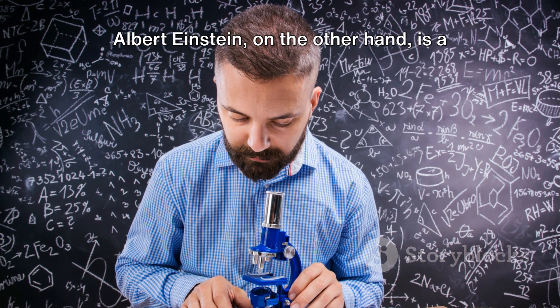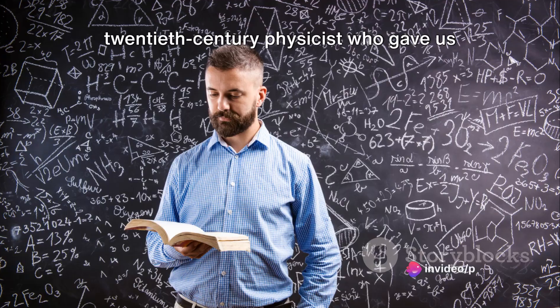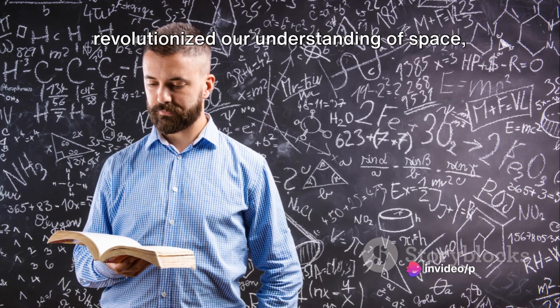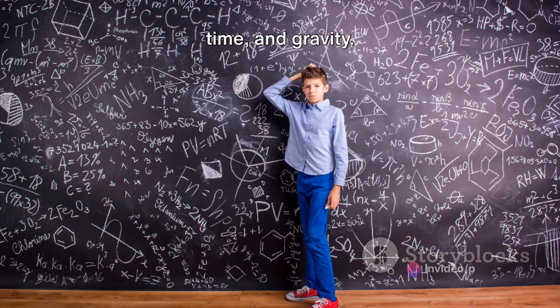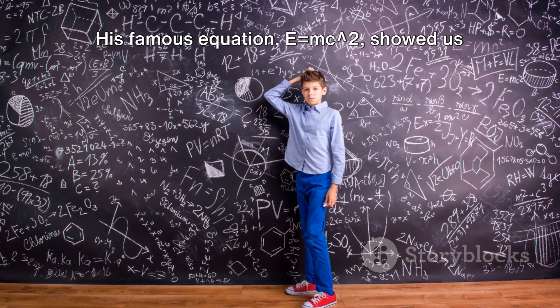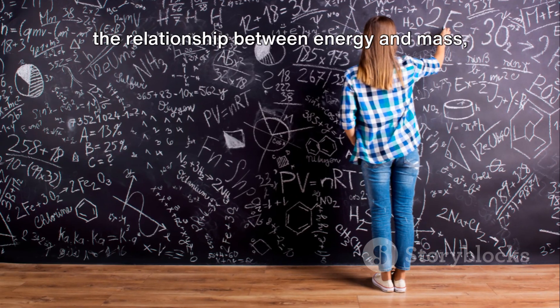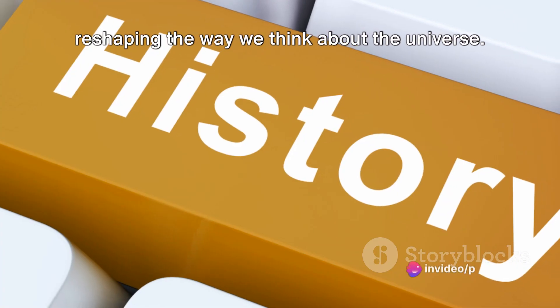Albert Einstein, on the other hand, is a 20th century physicist who gave us the theory of relativity, which revolutionized our understanding of space, time, and gravity. His famous equation, E=MC squared, showed us the relationship between energy and mass, reshaping the way we think about the universe.